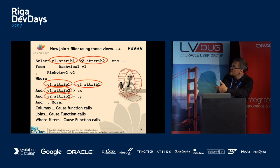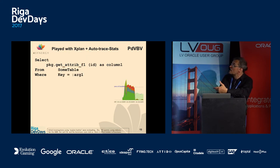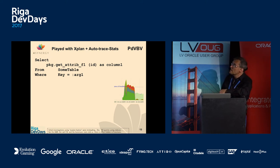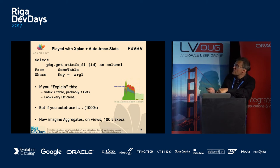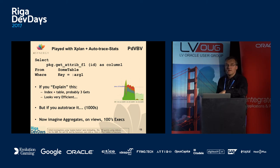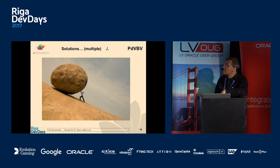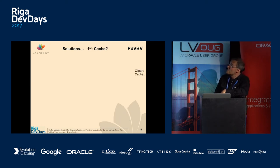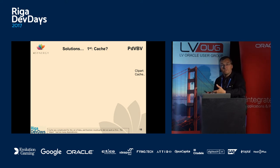If you put this in the explain plan it looks really good — three gets, a good explain plan, nothing wrong with it. But auto-trace it and you see thousands of gets, because there's a function in there that causes a lot of other queries to fire that you don't see in the first explain plan. Think about that.